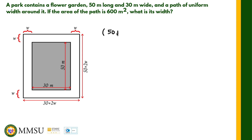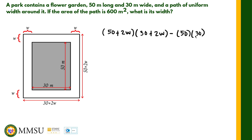The area of the outer rectangle is (50 + 2w) multiplied by (30 + 2w), and then we subtract the area of the flower garden, which is 50 multiplied by 30 meters. This gives the area of the path, because the bigger rectangle minus the smaller rectangle equals the area of the unshaded portion — the path. We equate this to 600 square meters.